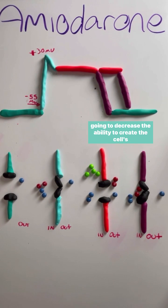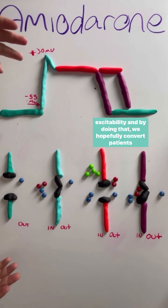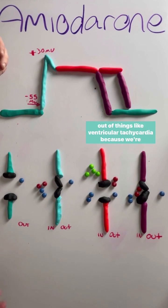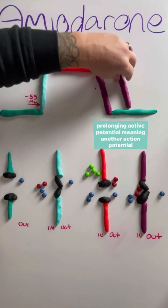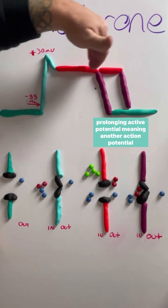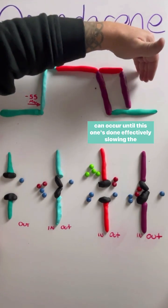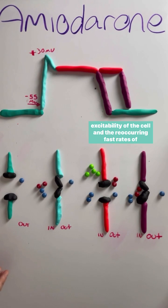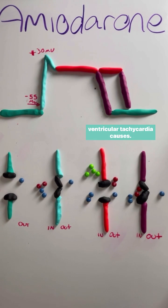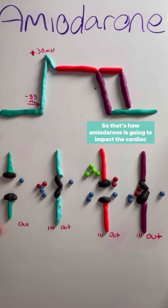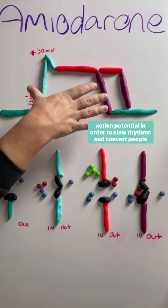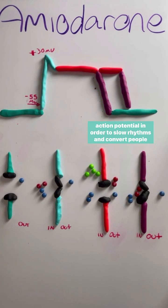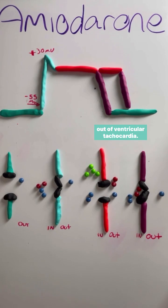By doing that, we're going to decrease the ability to create the cell's excitability. And by doing that, we can hopefully convert patients out of things like ventricular tachycardia, because we're prolonging the action potential — meaning another action potential can't occur until this one's done — effectively slowing the excitability of the cell and the recurring fast rates that ventricular tachycardia causes. That's how amiodarone impacts the cardiac action potential to slow rhythms and convert people out of ventricular tachycardia.